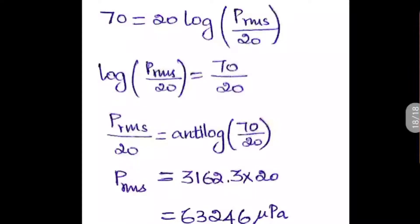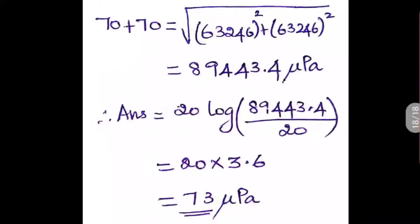This P_RMS of 63246 µPascal corresponds to one machine at 70 decibels. For two machines of 70 decibels each, the combined P_RMS is found by taking the square root of 63246 squared plus 63246 squared, which gives 89443.4 µPascal. Substituting back: 20 log of 89443.4 by 20 gives 73 decibels. So the answer is 73 decibels.